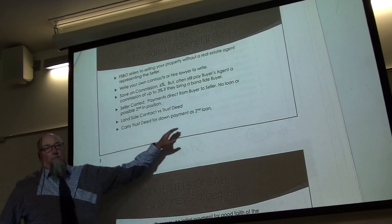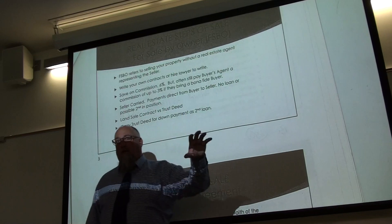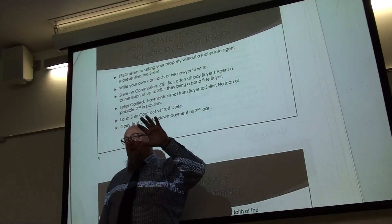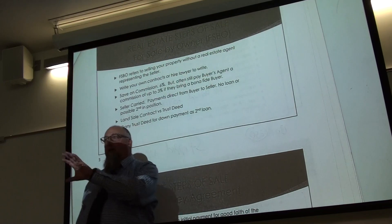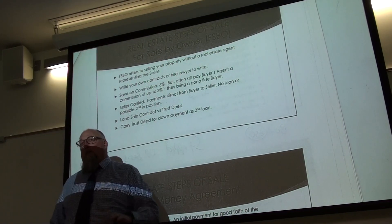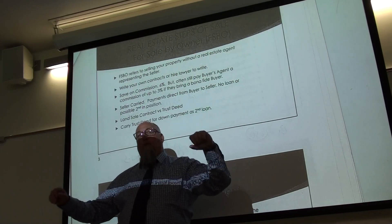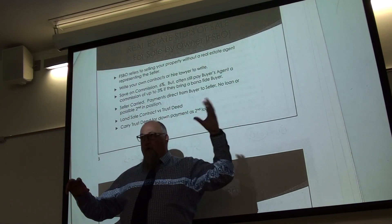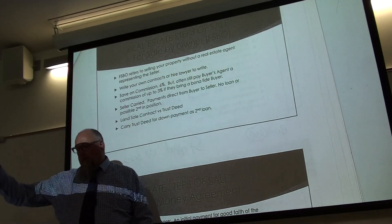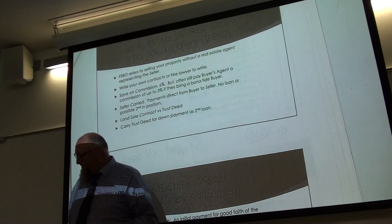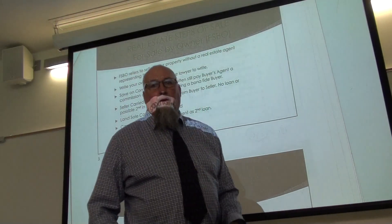In summary: if you're selling, you want to sell on a land sale contract; if you're buying, you want to buy on a trust deed. Additionally, if the buyer can't afford a full down payment, the seller can carry a second loan behind the bank loan in second position. The buyer gets the bank loan for most of the balance and then makes payments to the seller on the remainder.